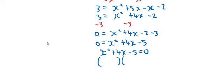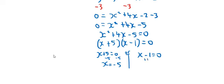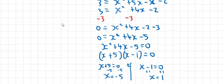Now I'm going to factorize it — this is where we need to know how to factorize quadratic equations. I'm looking for two numbers that multiply to give minus 5 but sum to give 4, which is plus 5 and minus 1. That gives me: either x plus 5 equals 0 or x minus 1 equals 0. So x equals minus 5 or x equals 1. We've found two values for x.